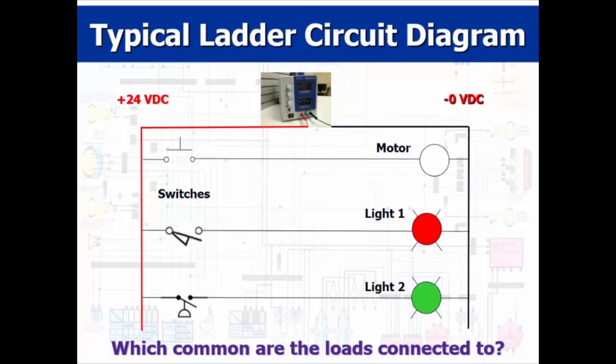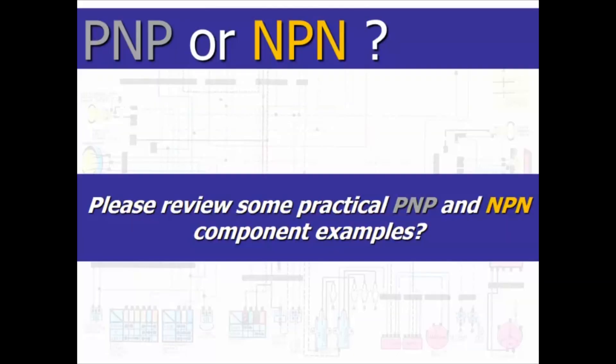Here, all loads are connected directly to the negative common. That indicates a PNP circuit. With that information, let's look at some circuit component examples.